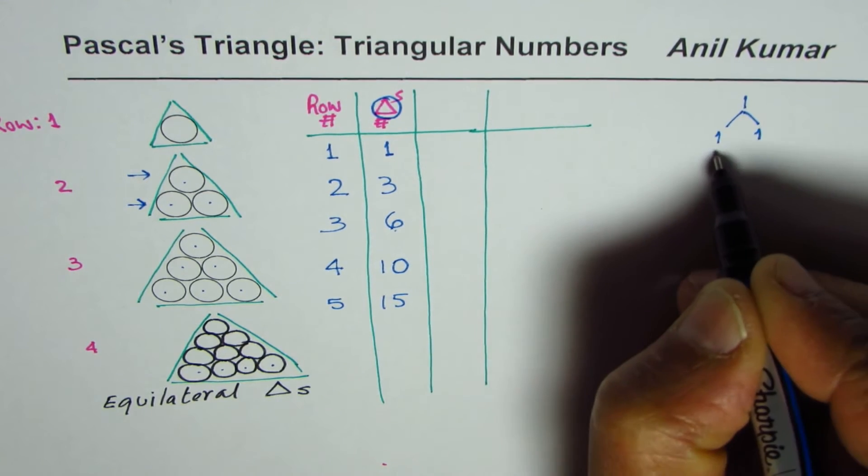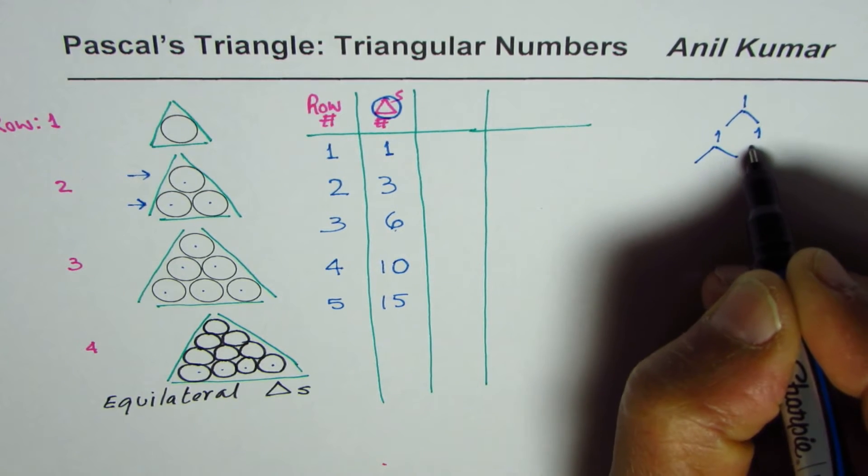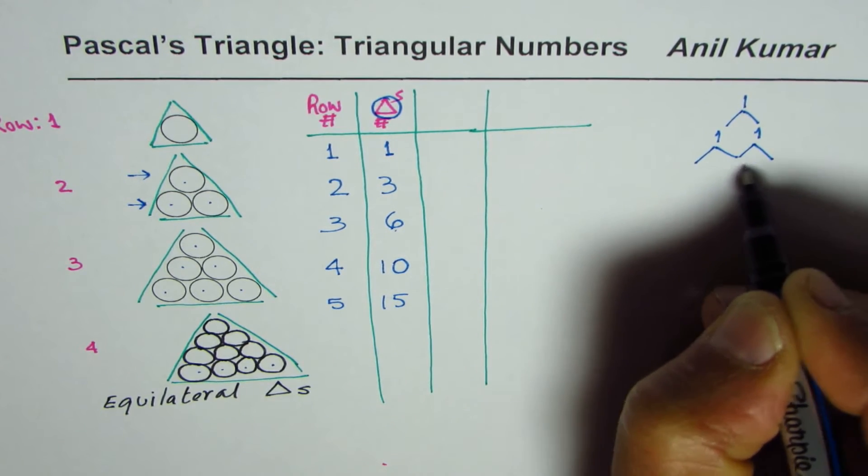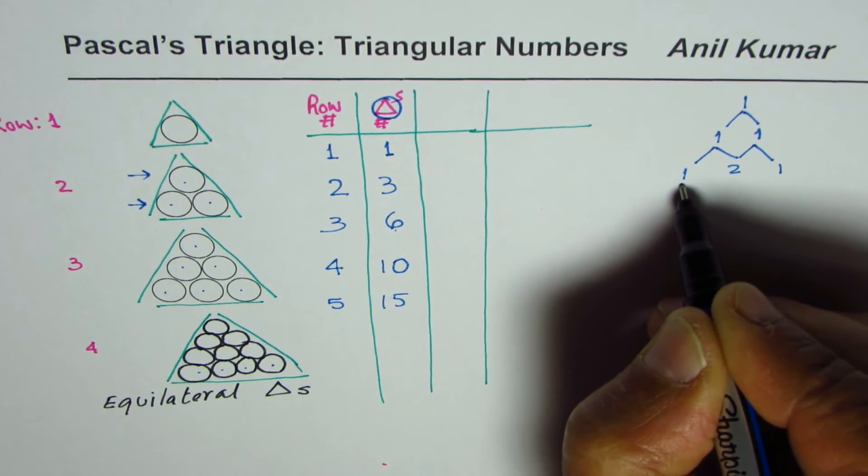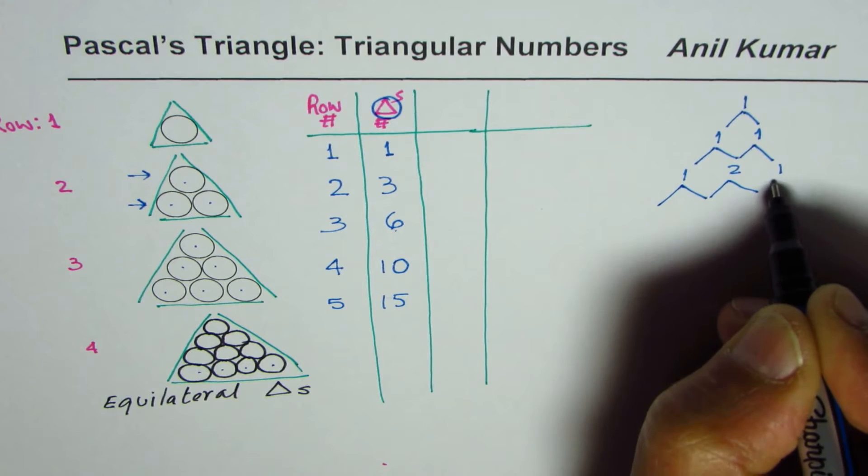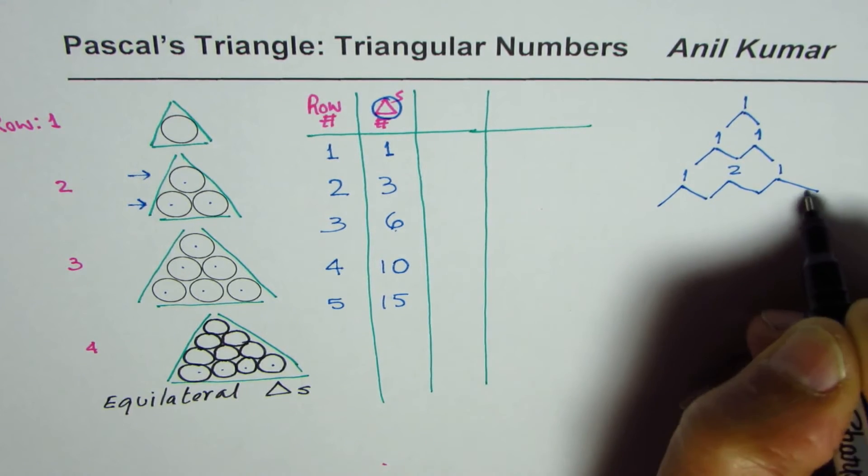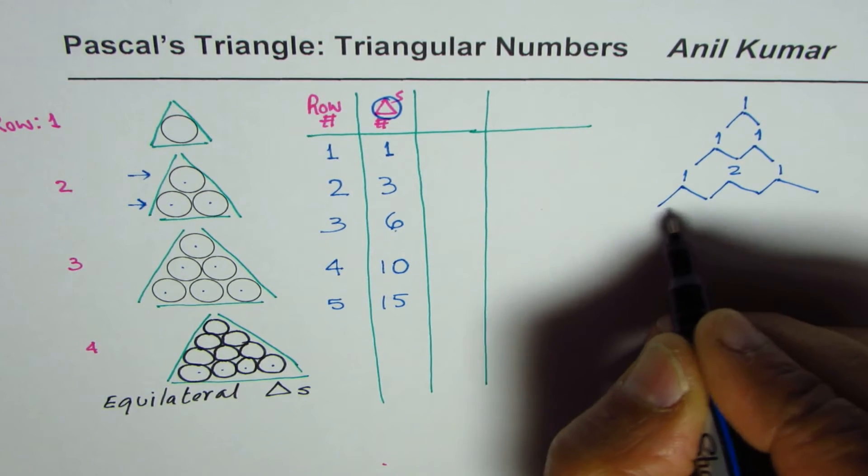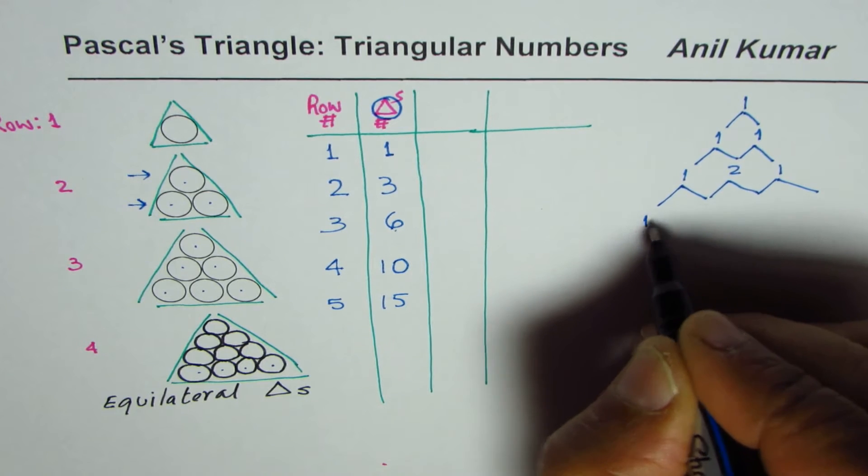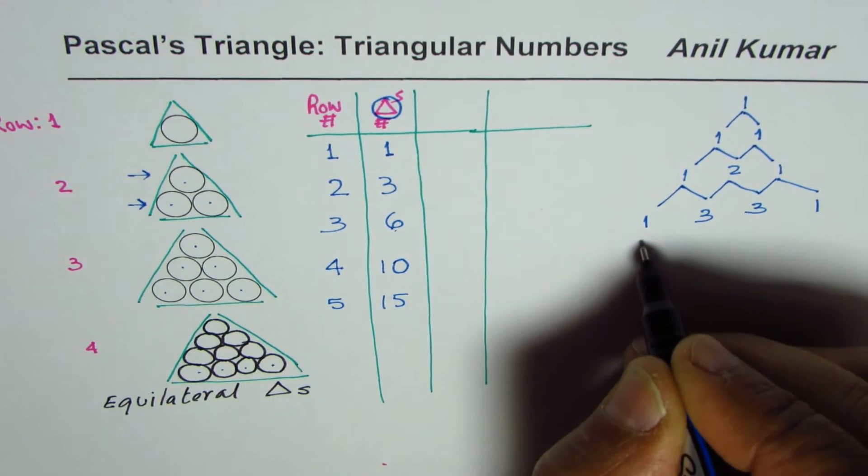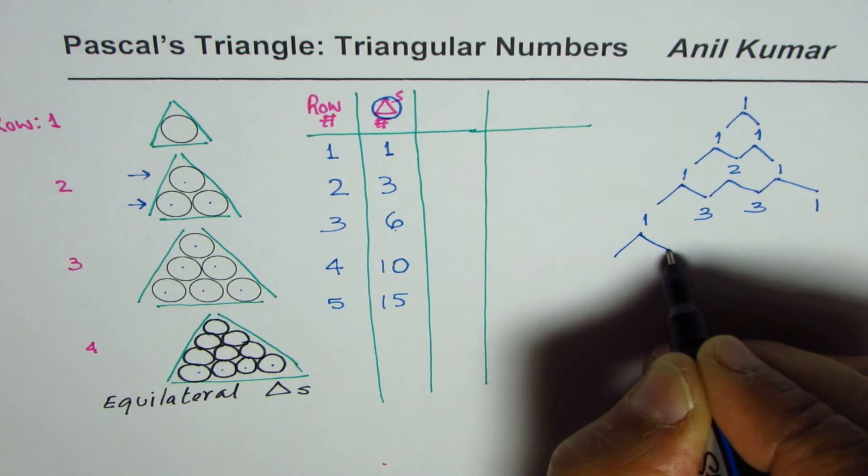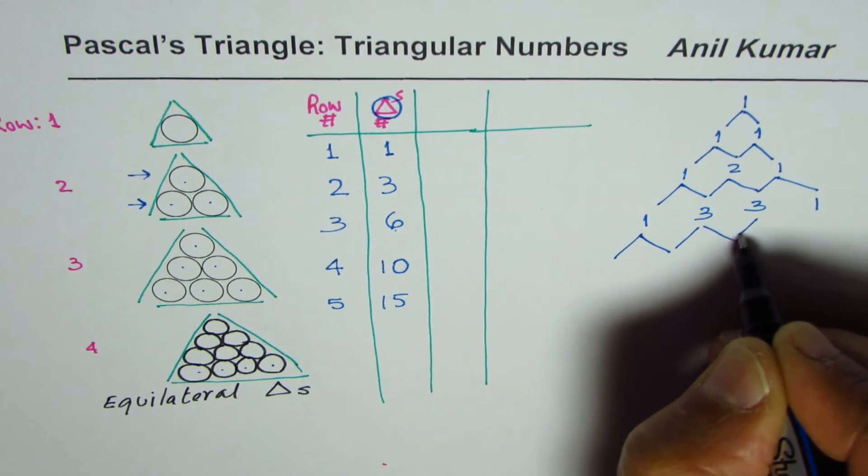And then when you expand in row one, we have these two ones. And in the second row, we have three terms. So one, two and one. And in the third row, we have four terms. So with every row, there are four numbers. So when you add one, one plus two is three, three and one. And in the next row, we have one more term.